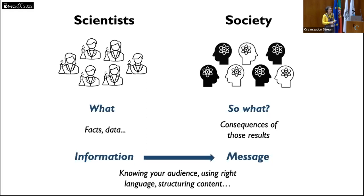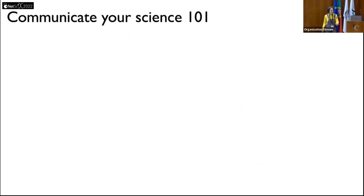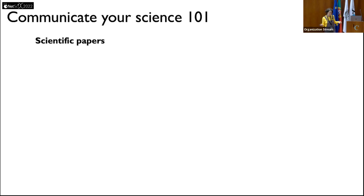We could spend an entire day talking about how to structure information into a message, but today I'll briefly overview some key aspects: knowing your audience, adapting your language to the people you're talking to, and structuring the content so that you shape your information into a message that will resonate. I've prepared 'Communicate Your Science 101' — I noticed Eugenio Valdano also had an 'Epidemics 101,' which I found funny. So: really simple suggestions.